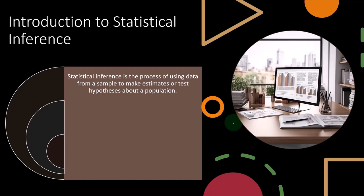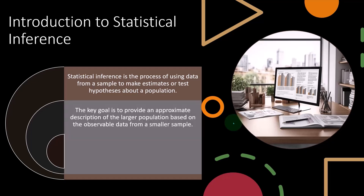We look at the spread of the data, but what we're hoping to do once we know that is infer that on the entire population, so we have predictive power about the entire population. The key goal is to provide an approximate description of the larger population based on the observable data from a smaller sample.